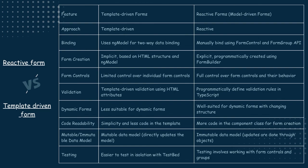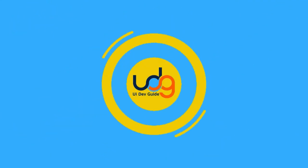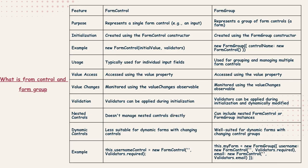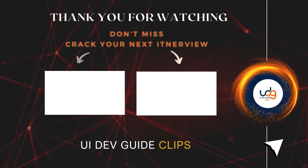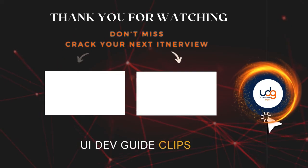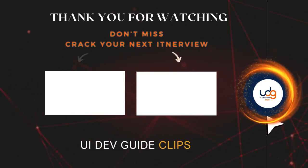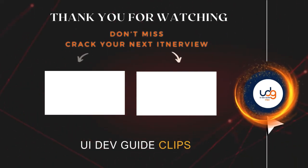What is FormControl in reactive forms? FormControl grabs the element-related data — for example, inside an input element of a given type, FormControl captures that input's data. What is FormGroup? FormGroup is used when we have multiple form elements — it grabs all the elements' data and acts as a container type.